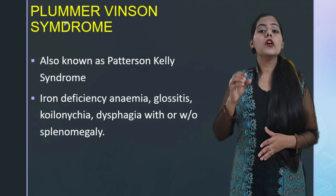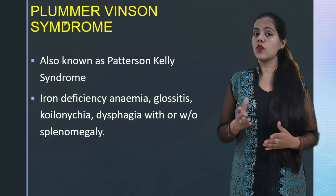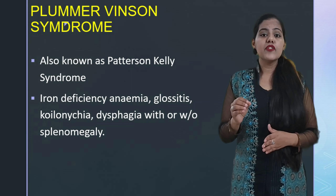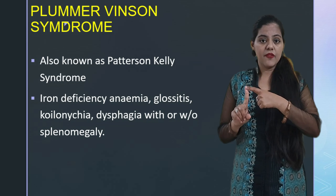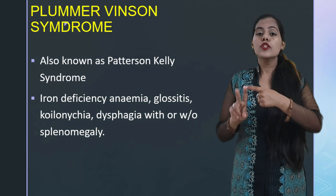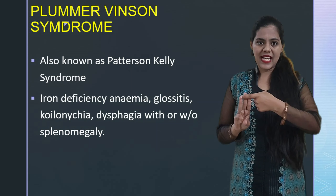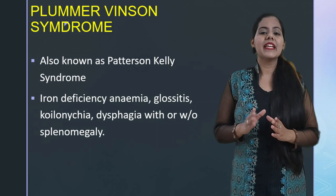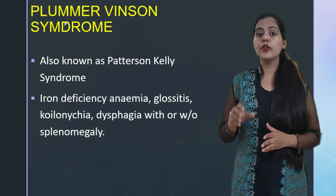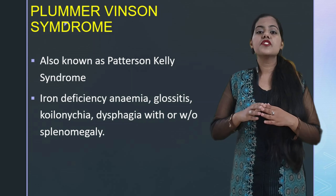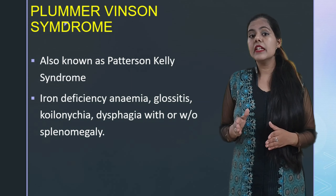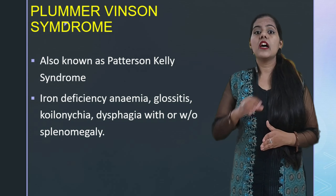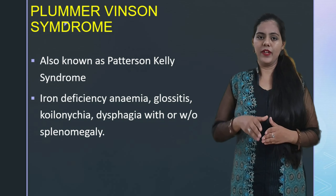There is one syndrome associated with dysphagia: Plummer-Vinson syndrome, which is also known as Paterson-Kelly syndrome. This syndrome is associated with iron deficiency anemia, spoon-shaped nails, glossitis, and dysphagia with or without splenomegaly. In this syndrome, due to iron deficiency, there is degeneration of the epithelium in the oesophagus, and therefore we see atrophic epithelium in the oesophagus.